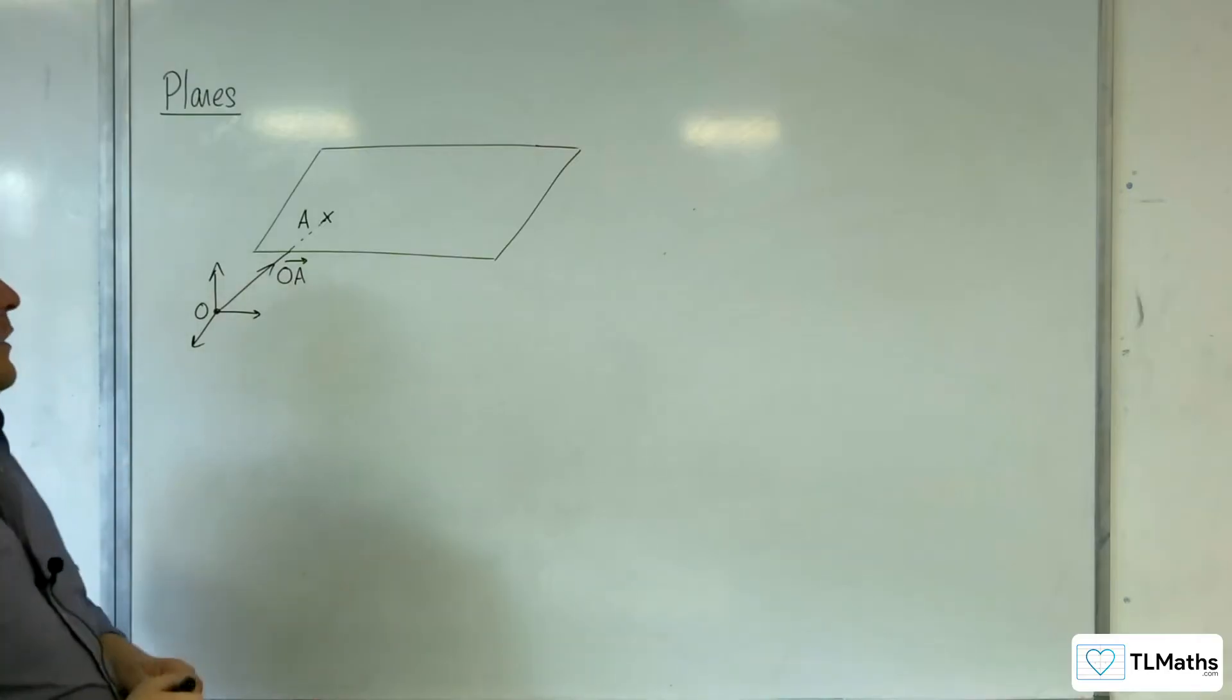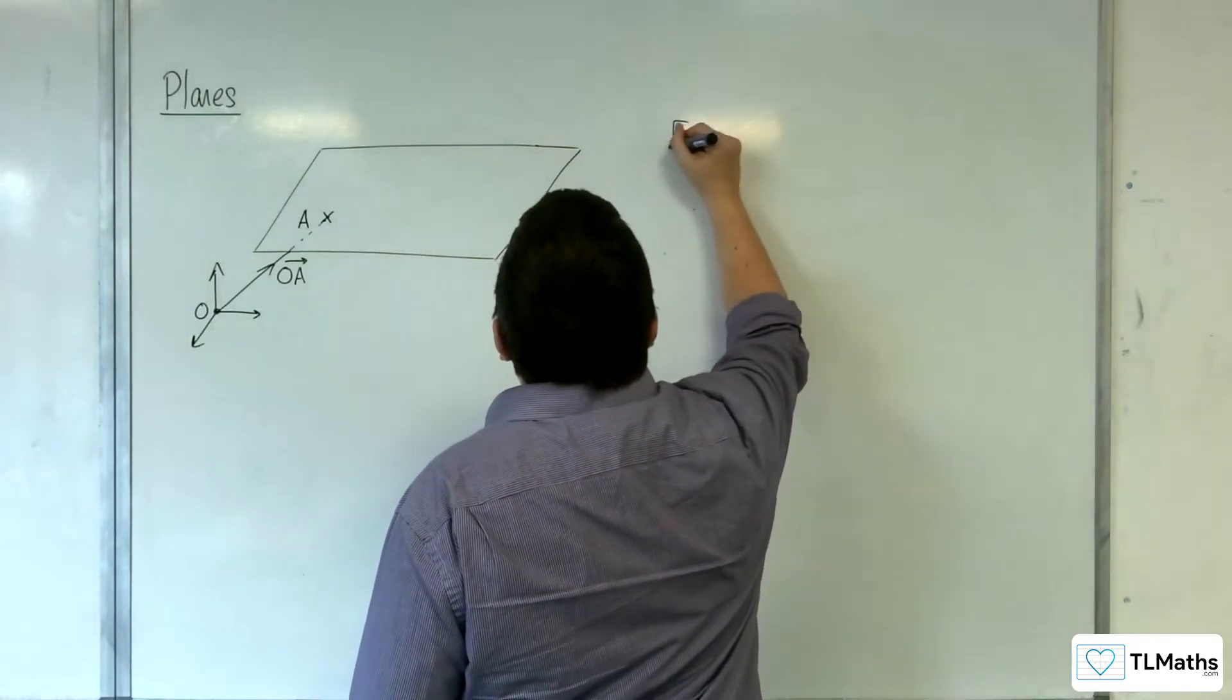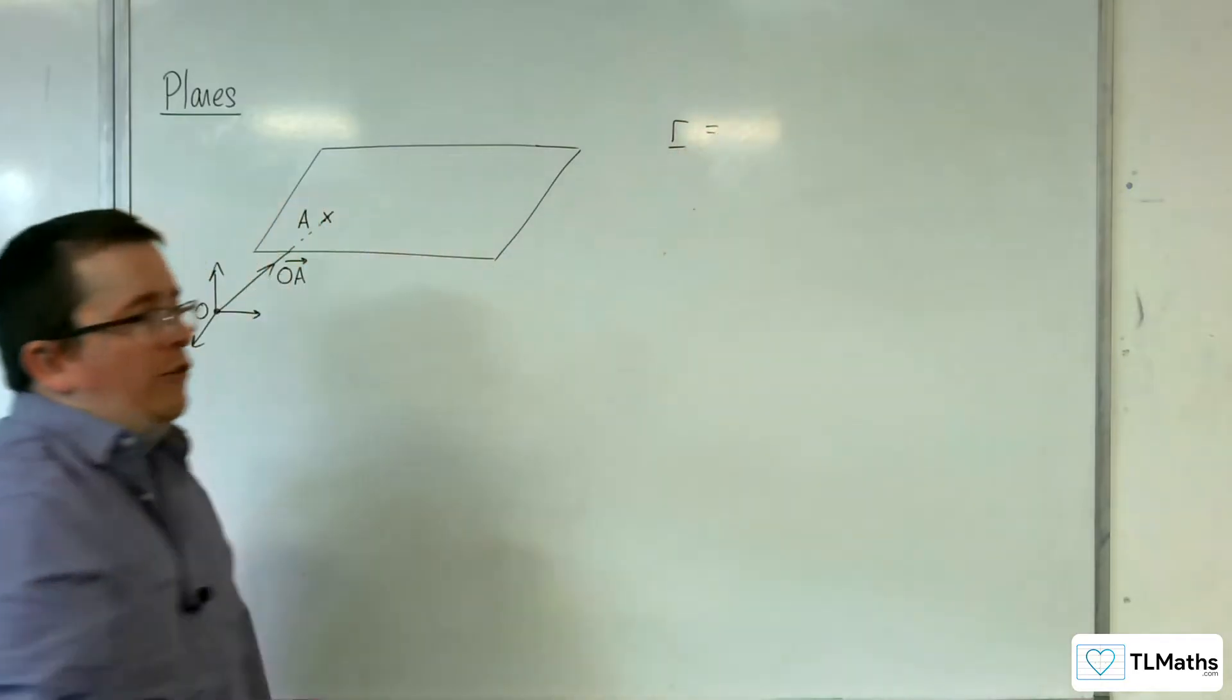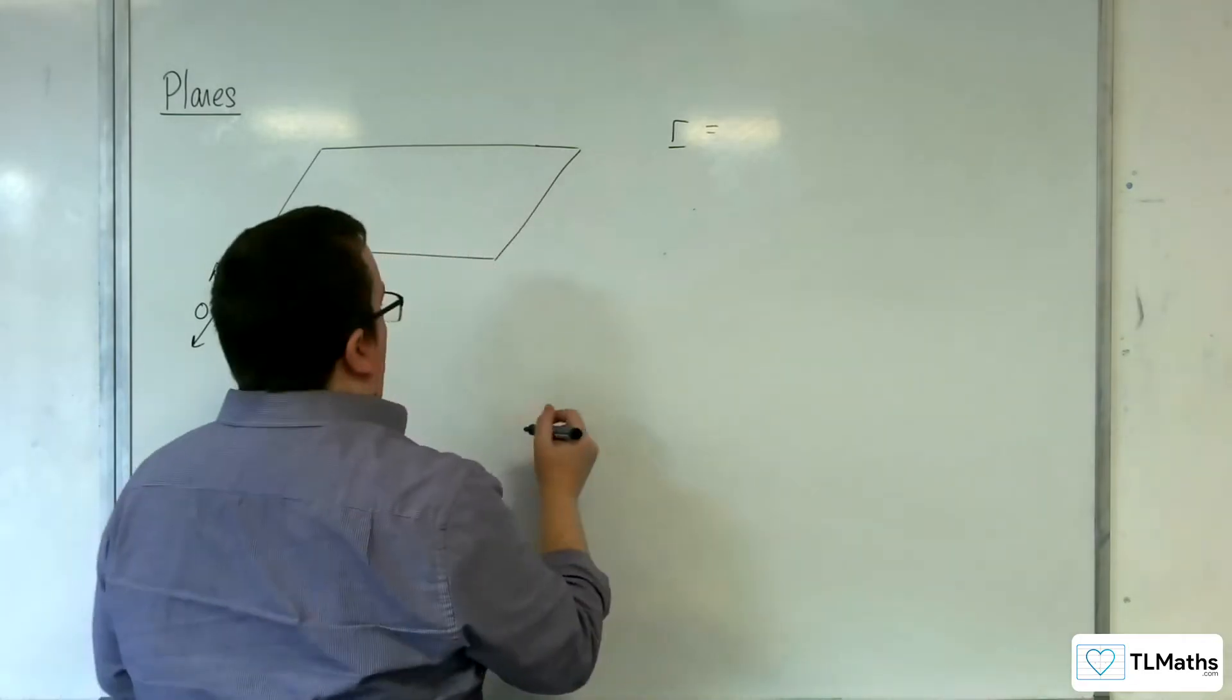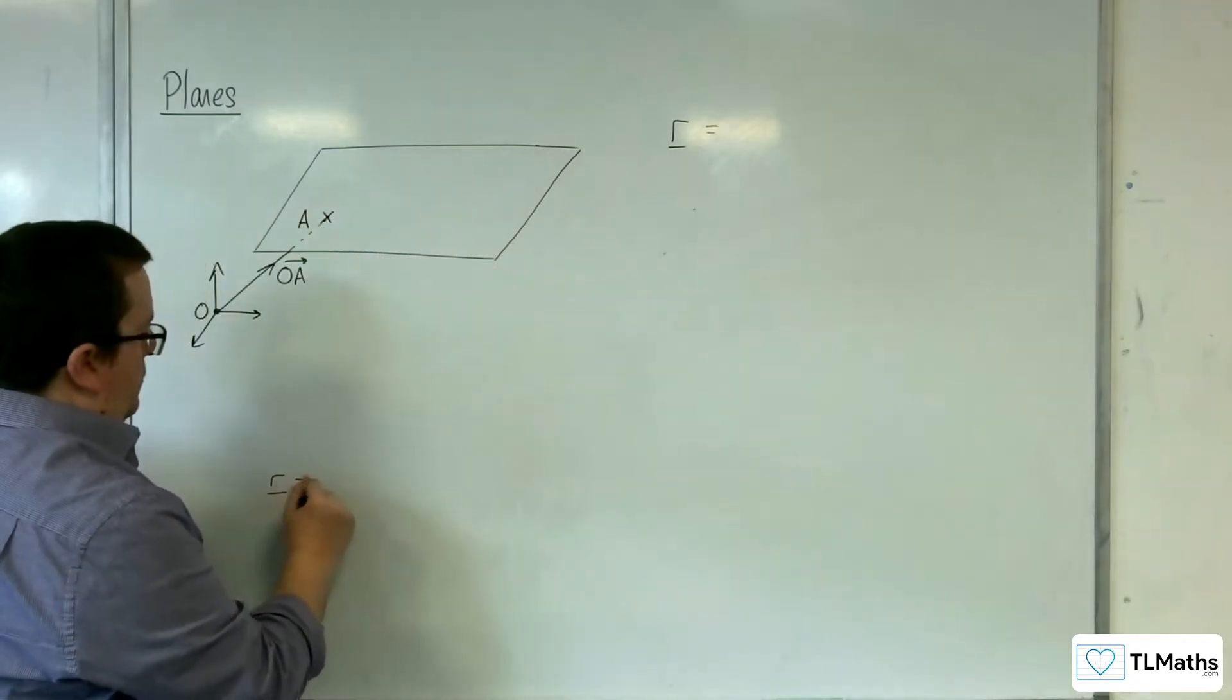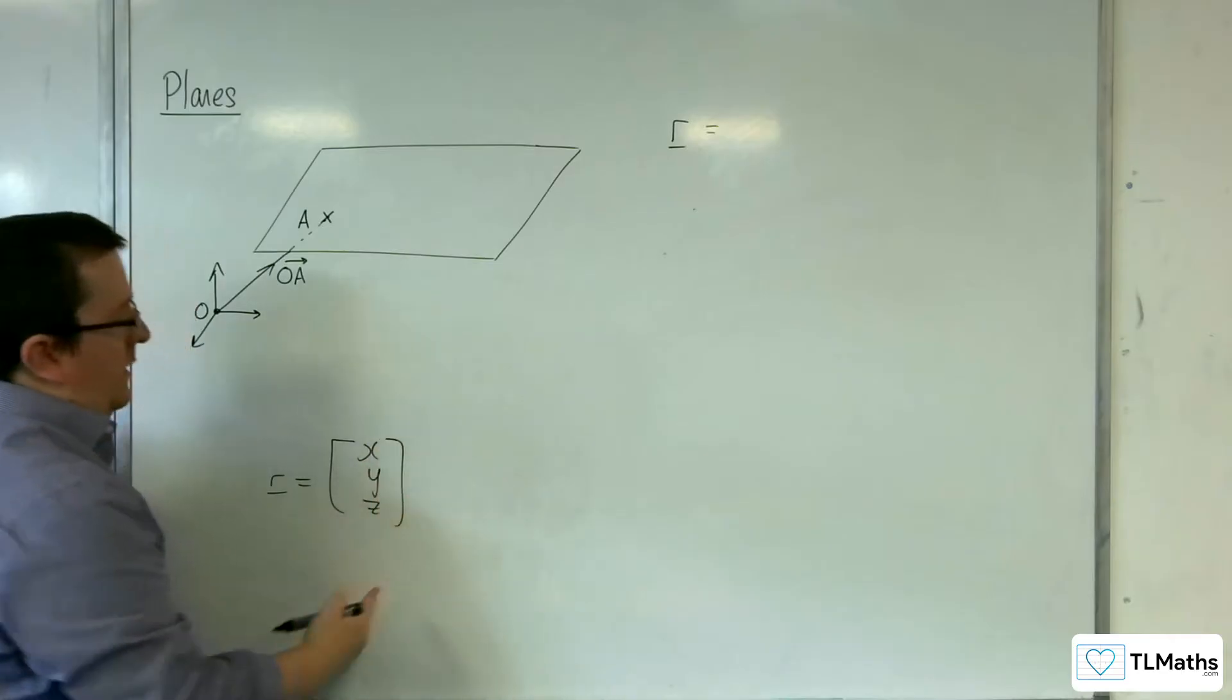That's the first thing. So currently what we have is that R, which remember represents X, Y, Z in exactly the same way as it did for lines. So I'll pop that down here just as a reminder. So remember X, Y, Z, that's what R is.